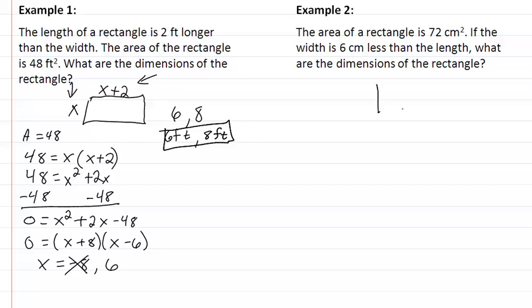So again we start off with a rectangle. The width is 6 centimeters less than the length, we don't know what the length is so we will call it x. That means the width needs to be x minus 6.